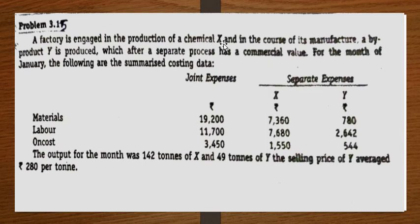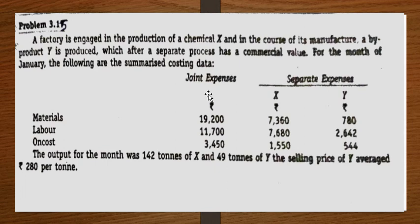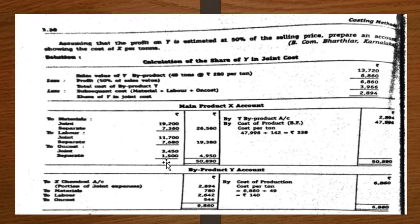The main product here is X and its by-product is Y. Separate expenses are given for both. What they have asked us to prepare: assuming that profit on Y is estimated at 50 percent of the selling price, prepare an account showing the cost of X per ton. So we need to find out what is the per-ton value for the cost of X.